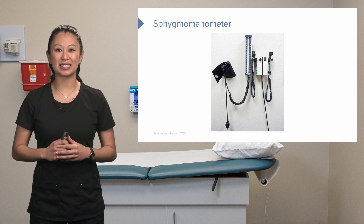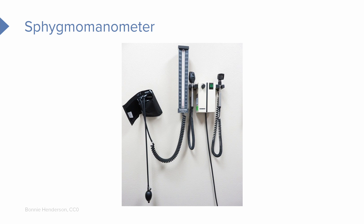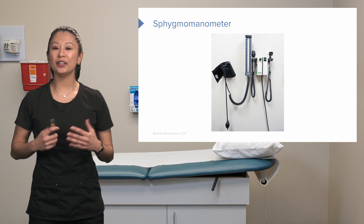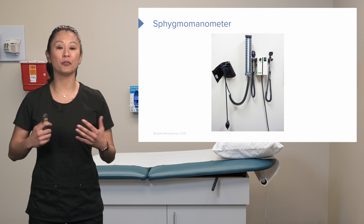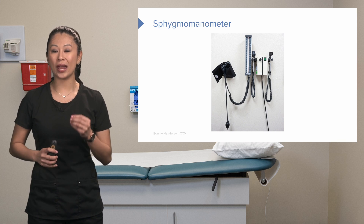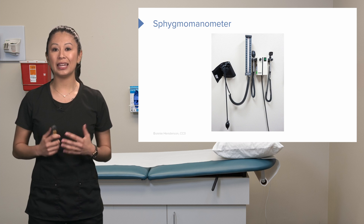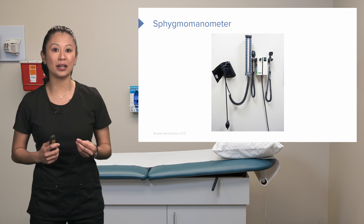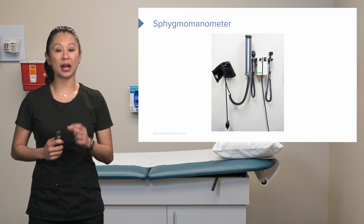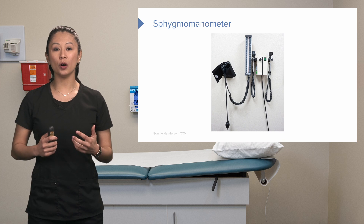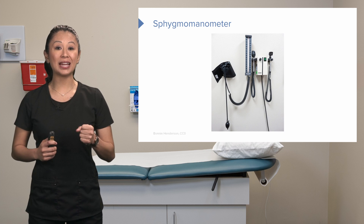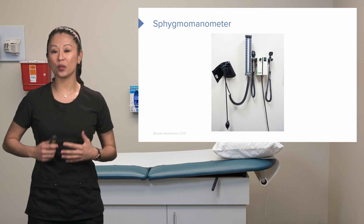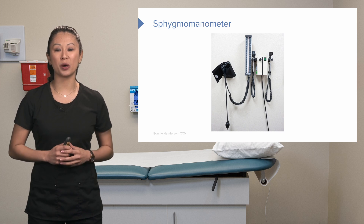Let's look at the sphygmomanometer — or as we simply call it, the blood pressure cuff. This one is hooked up to the wall, common in a physician's office for routine checkups. It's a manual blood pressure cuff, not powered by battery. We get our reading by looking at the dial with markings, and we inflate the bulb at the bottom to obtain our reading. The manual cuff is the most accurate method.